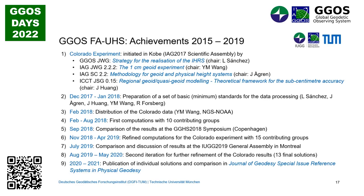The chairs of these different working groups and study groups prepared a basic set of standards and definitions to be provided together with the Colorado data, ensuring all working groups use the same ellipsoid, the same mass density, and similar specifications — small things that could produce large differences in results. The data was distributed in 2018 and we performed the first computation between February and August 2018. Initially we had 10 computation groups.